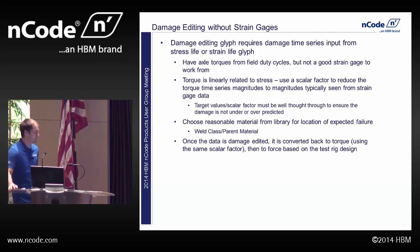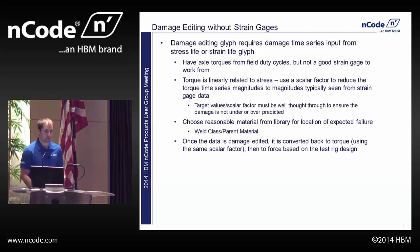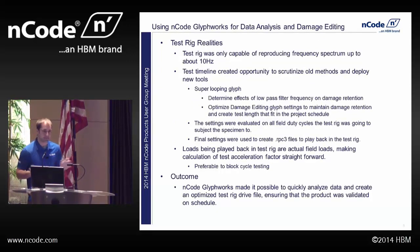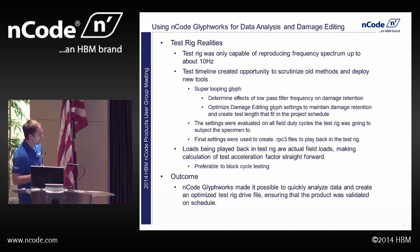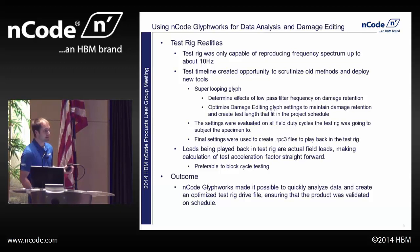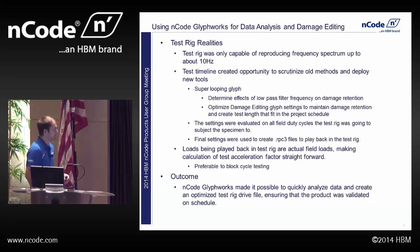Once the data is damage edited, I converted it back to torque using that same scalar factor, and from there converted it to force based on the test rig design — the length of that lever arm I showed earlier. Back to reality: all of the data we collected was at 200 Hz, but we're using hydraulic actuators which limits the test rig to 50 Hz. Also, the connecting link between the drive motor and the axles is chain and sprocket, so there's a lot of chain slop in there, which further limits the test rig's ability to reproduce some of that frequency content.